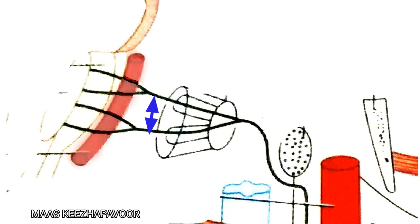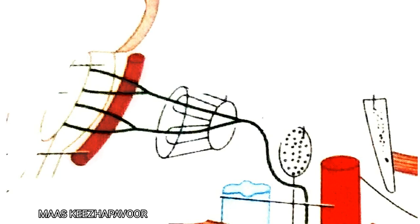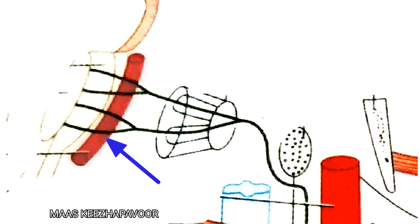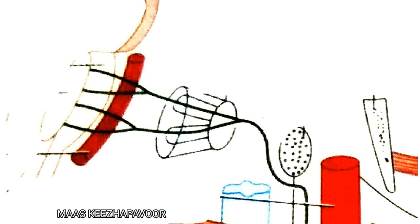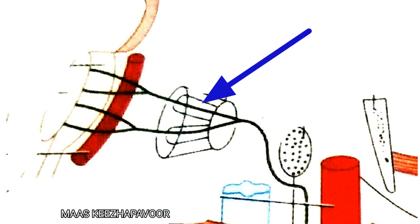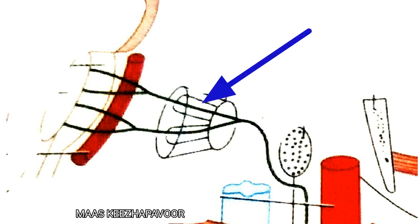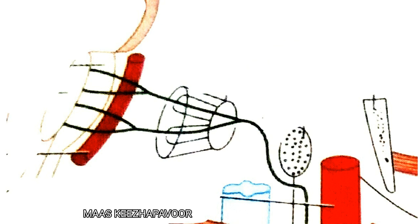In the intracranial part, the hypoglossal rootlets unite to form two roots. These two roots lie posterior to the vertebral artery. They run laterally to enter into the anterior condylar canal, or hypoglossal canal. The two rootlets join together to form a single trunk within the canal, and then it comes out of the hypoglossal canal.